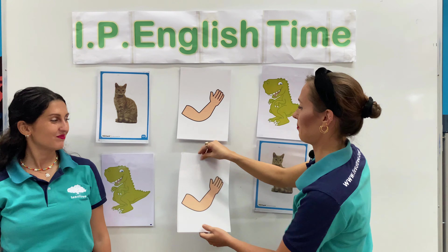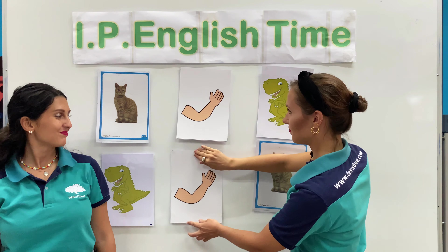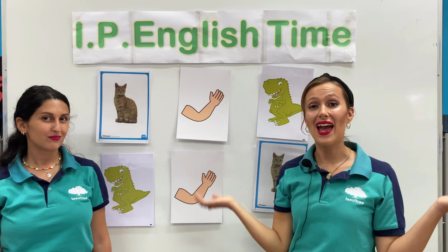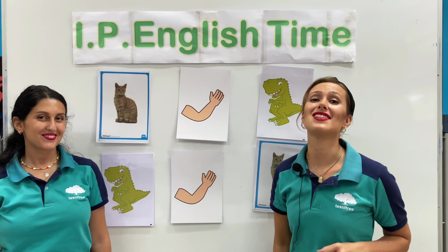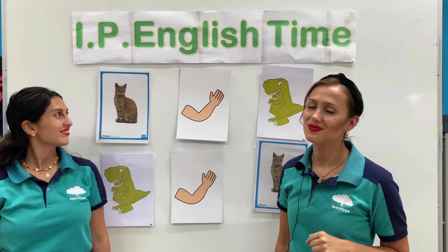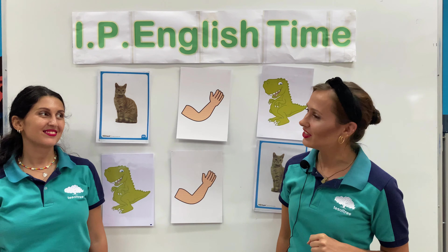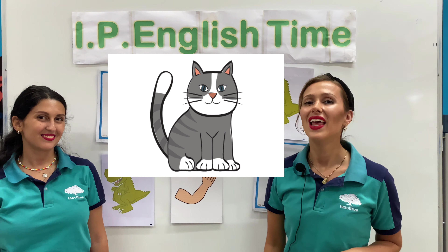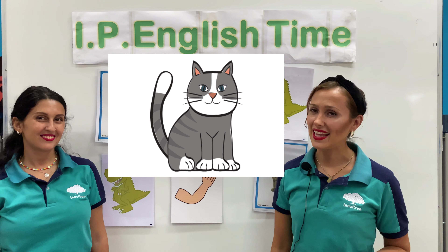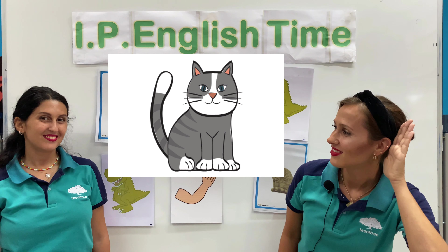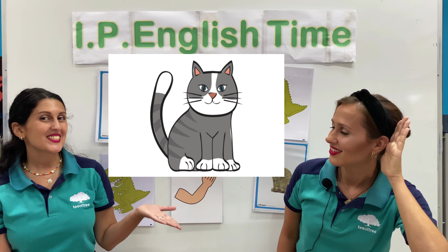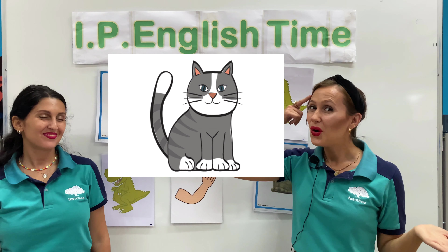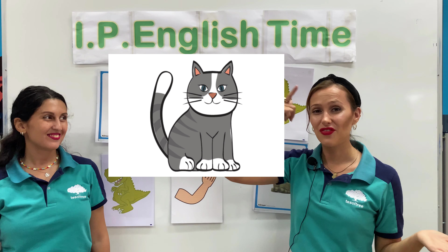Now let's have a look at the pictures. Can you tell me what it is and what is the first letter? Let's have a look — what is this? It's a cat. Now let's think — what is the first letter?